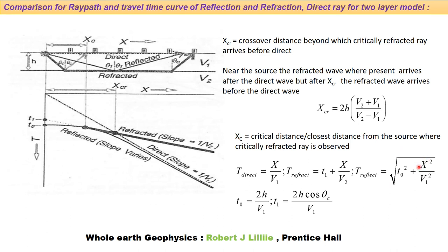T0 is the two-way vertical travel time (2h / V1) and T1 = 2h cos(theta_c) / V1. From the picture and the travel time curves, when carrying out reflection or refraction survey, you can identify what types of waves are present. Based on the travel time curves for refracted and direct waves, those waves can be eliminated in a reflection survey where refracted and direct waves are considered noise.